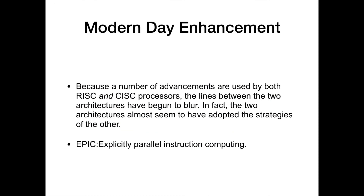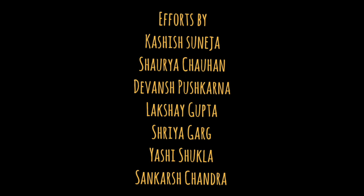Now moving on to our last topic — modern day enhancements. Because of the number of advancements used by both RISC and CISC processors, the lines between the two architectures have begun to blur. In fact, the two architectures almost seem to have adopted the strategies of the other. Today's modern processors are actually using both architectures for better output and are areas of active research. One such example is EPIC — explicitly parallel instruction computing. Hope you understood the topic. If you have any questions, ask below in the comments and make sure you subscribe to the channel. Thank you.